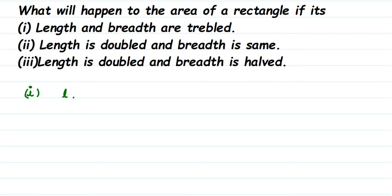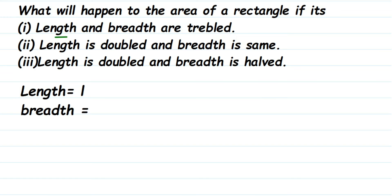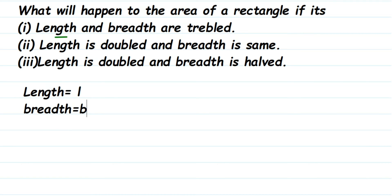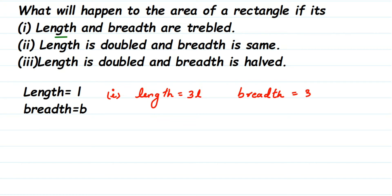Suppose the length is L and breadth is B for the normal rectangle. In the first condition, length and breadth are tripled, so the length will become 3L and the breadth will become 3B, since both length and breadth are tripled.